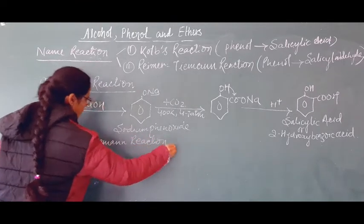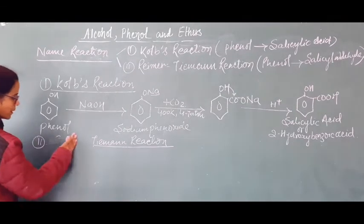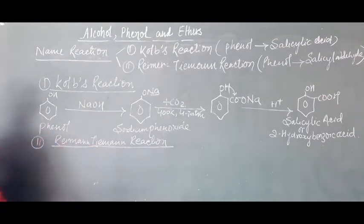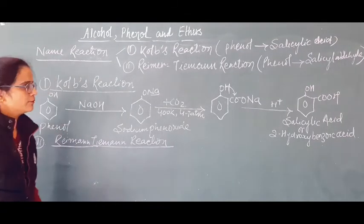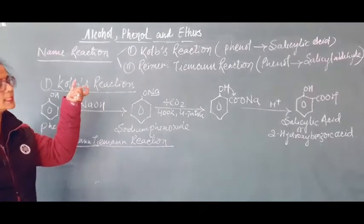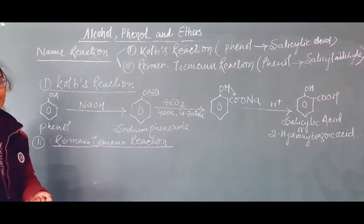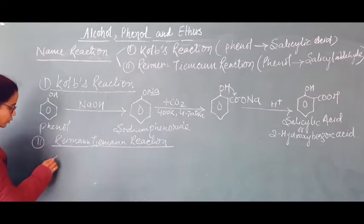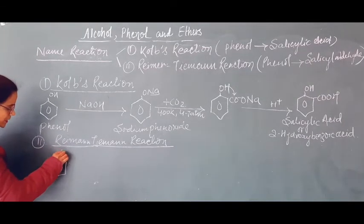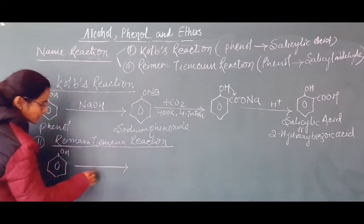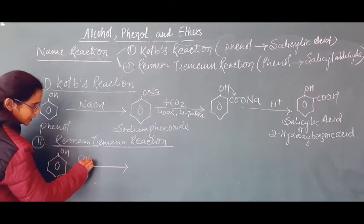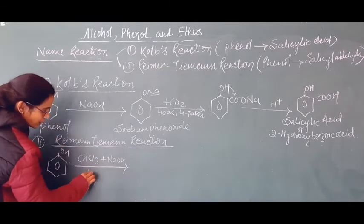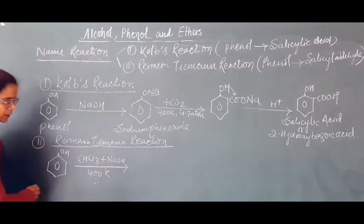Next is the Reimer-Tiemann reaction. Just like Kolbe reaction, as soon as you see this name reaction, your mind should recall: this reaction is useful for the preparation of salicylaldehyde when phenol is converted. Salicylaldehyde involves a 3-step reaction. In the first step, we treat phenol with chloroform (CHCl₃) and NaOH at 400 Kelvin temperature.